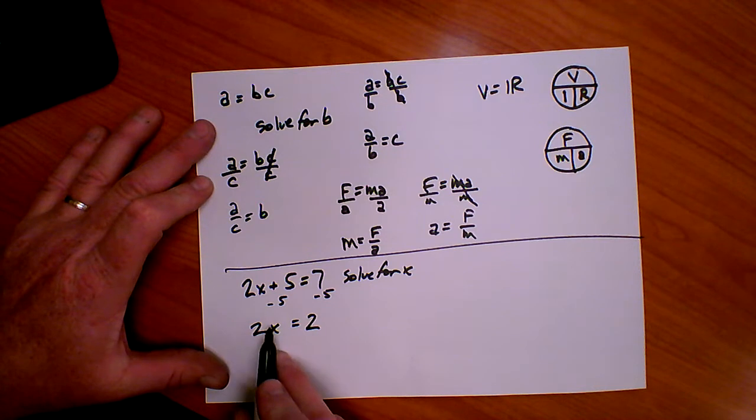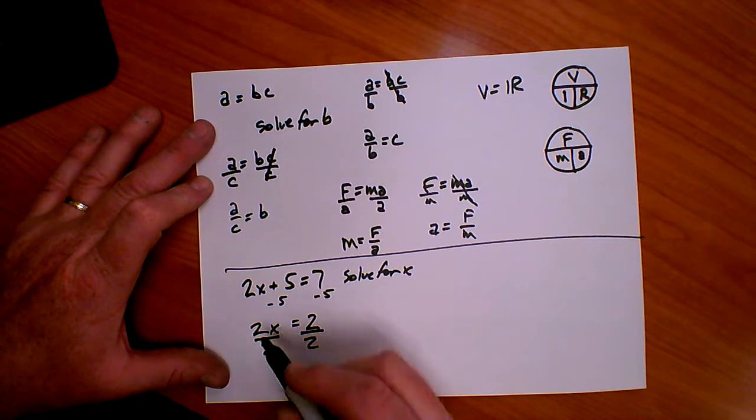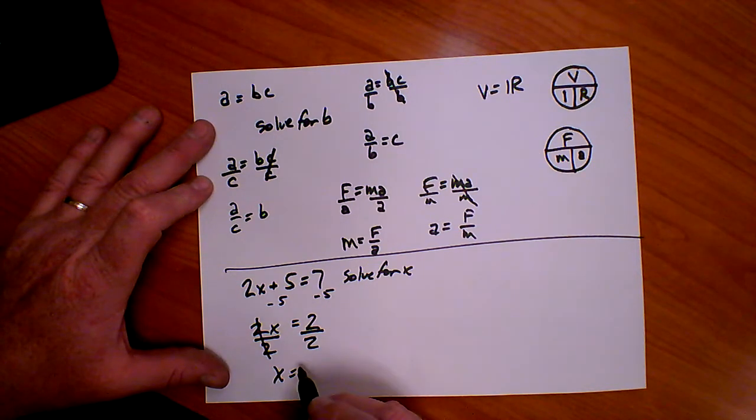Then I have 2X equals 7 minus 5 is 2. So now I've got the term with X by itself. And now I'm ready to get just X by itself. To get X by itself, I'm going to divide by 2. So I'm left with X equals 2 divided by 2 is 1. And there's my answer.